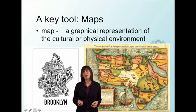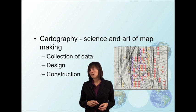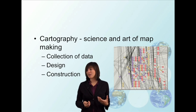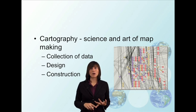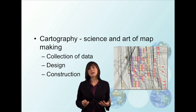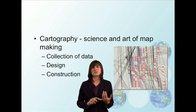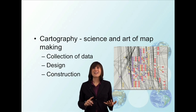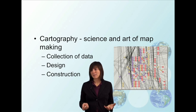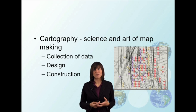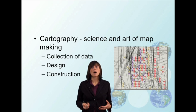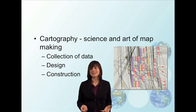The process of making maps is called cartography, and it can be thought of as both a science and an art of map making. What goes into it is the collection of data to understand where things are located, and then a process of designing and constructing maps. This used to be a much more difficult process before computer technology made it possible to make maps on a cheap, mass scale.